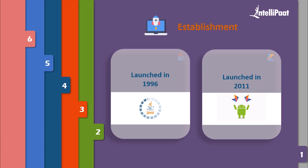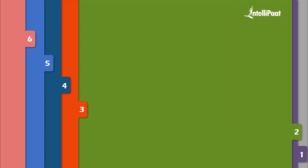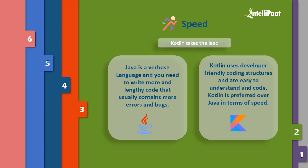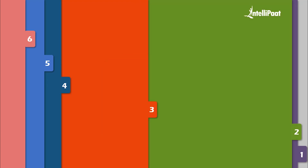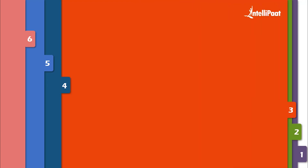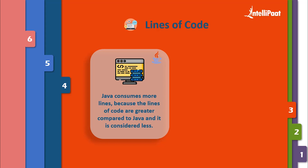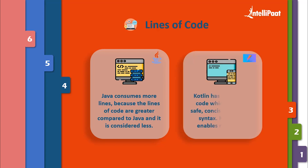Now let's look at the compilation speed for Java and Kotlin. Java is a verbose language — you need to write lengthy code that usually contains errors and bugs. Kotlin uses developer-friendly coding structures and norms that are easy to understand and use. In case of longer code compilation, Kotlin is preferred over Java — this is quite obvious when you have a larger application or a bunch of files to be executed. Java is somewhat less considered in terms of speed. Coming to lines of code, compared to Java, Kotlin has fewer lines of code which makes it safe and concise. Kotlin also offers null safety where it avoids null pointer exceptions — if you try to assign or return null to a variable or function, it won't compile.